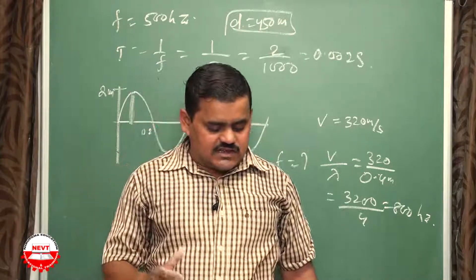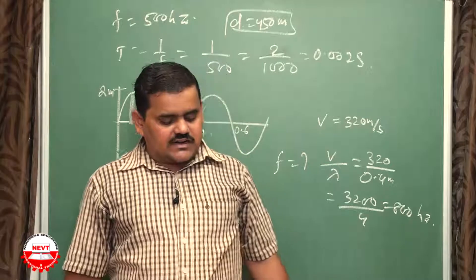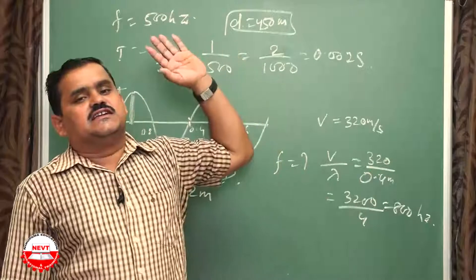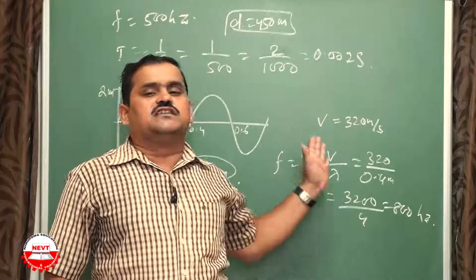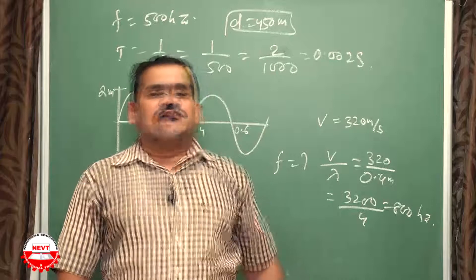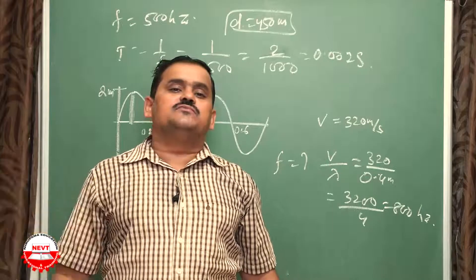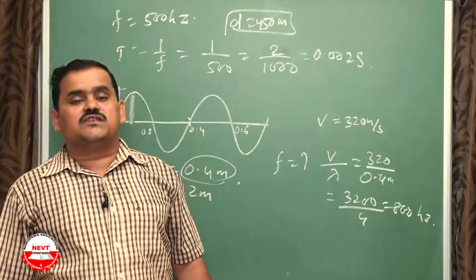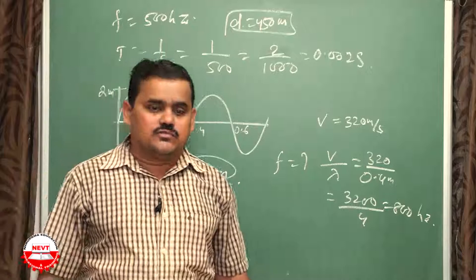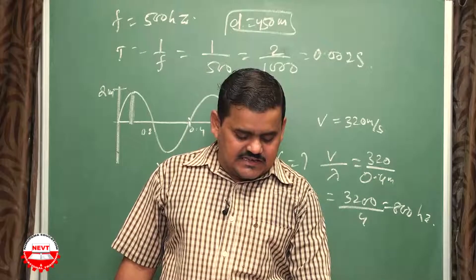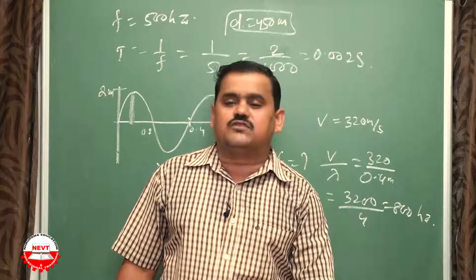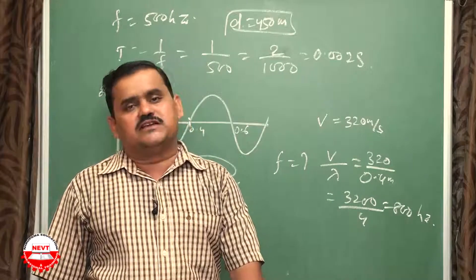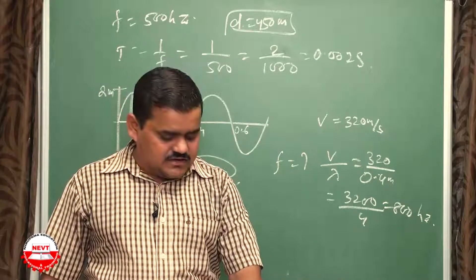Why does the stage of an auditorium have a curved background, curtains, carpet, and false ceiling? The curved background reflects sound in all directions toward the audience. The curtains and false ceiling are made of sound-absorbing material to reduce reverberation or multiple reflections inside the room. The sound of a ringing bell inside a vacuum chamber cannot be heard because sound is a mechanical wave that requires a material medium to propagate — in a vacuum there is no medium, so sound cannot travel.